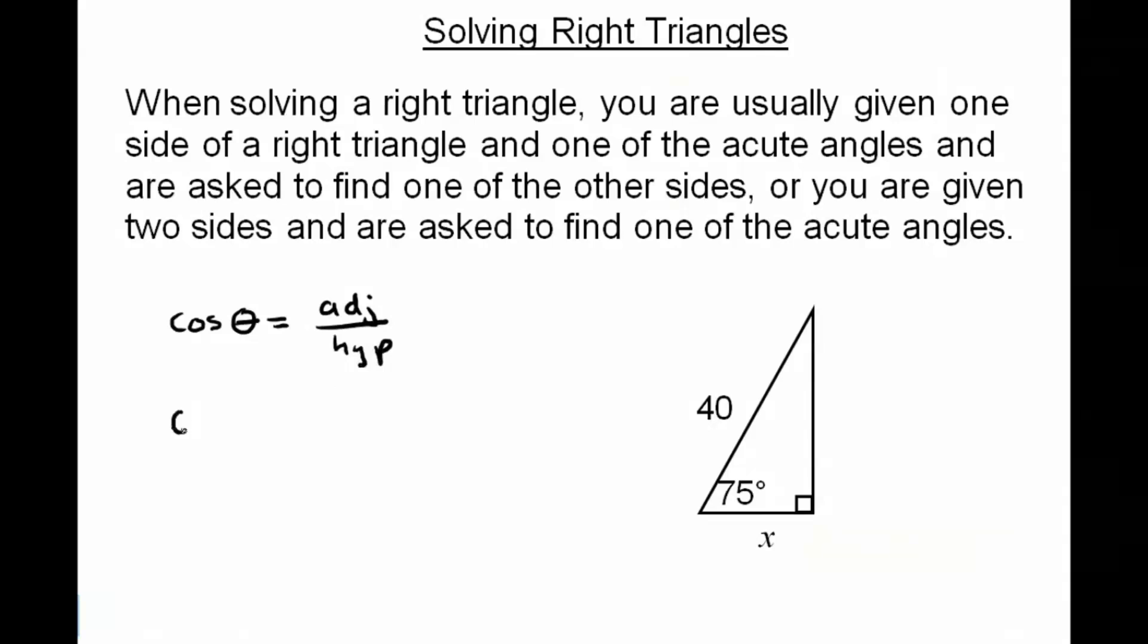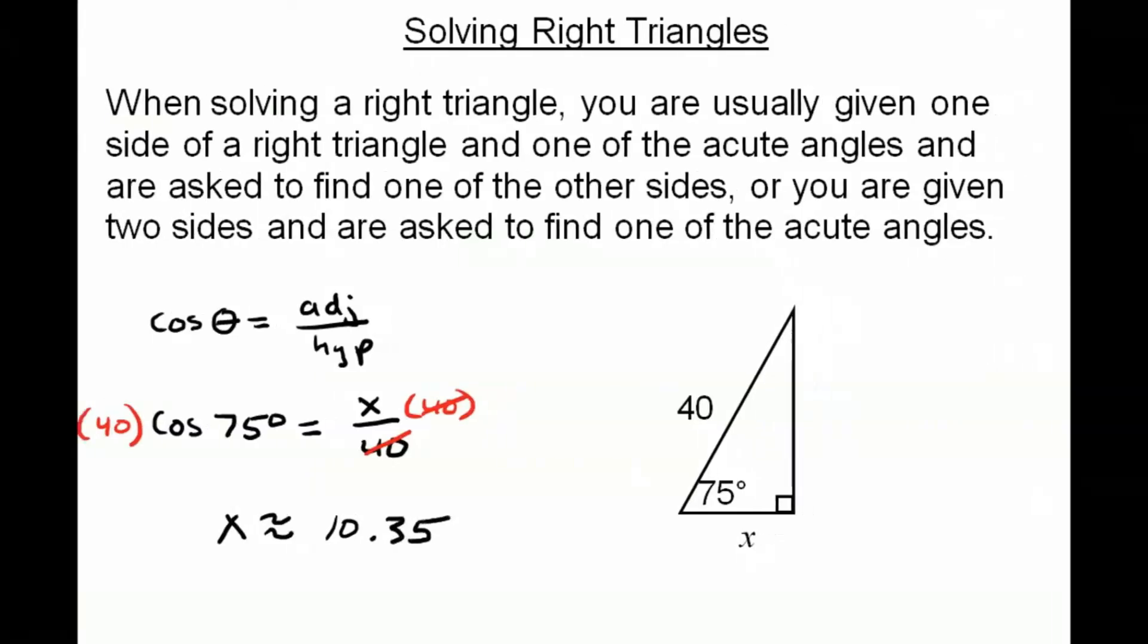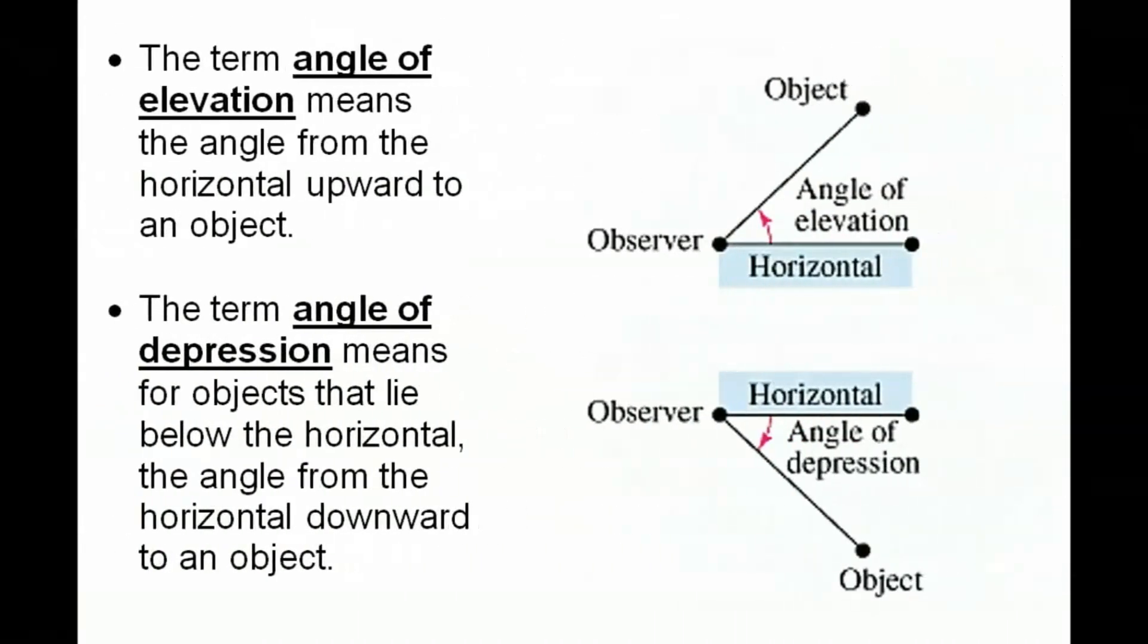Okay, so in this case the cosine of 75 degrees would equal x over 40. That's a simple algebraic equation to solve. I'm just going to multiply both sides by 40 so that they cancel on this side. And I have x equals 40 times the cosine of 75. And if I put that in my calculator, I get that x is approximately 10.35.